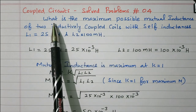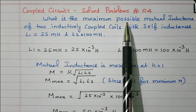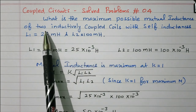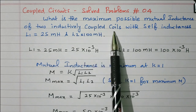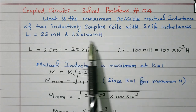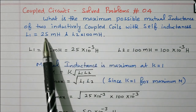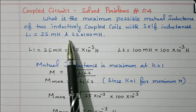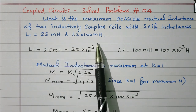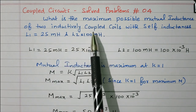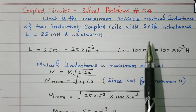Now we will see the statement: what is the maximum possible mutual inductance of two inductively coupled coils with self inductance L1 equal to 25 millihenry and L2 equal to 100 millihenry? We need to find the maximum possible mutual inductance.